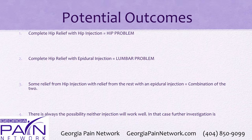Here are the potential outcomes. If you get complete hip relief with a hip injection, then it's a hip problem. If you get complete hip relief with an epidural injection, it's a lumbar problem. If you get some relief from the hip injection and the rest of the relief with an epidural injection, then you have a combination problem. There's always the possibility that neither injection will work well — in that case, further investigation is in order.